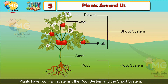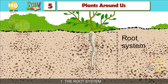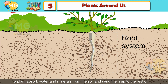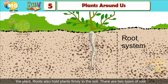The root system is the part of a plant that is below the surface of the earth. Roots absorb water and minerals from the soil and send them up to the rest of the plant. Roots also hold plants firmly to the ground. There are two types of root systems: taproot system and fibrous root system.